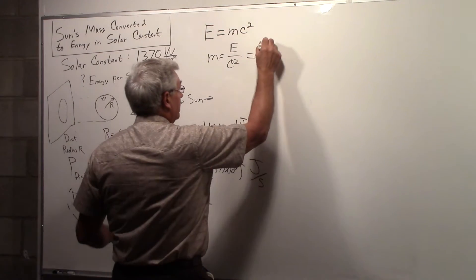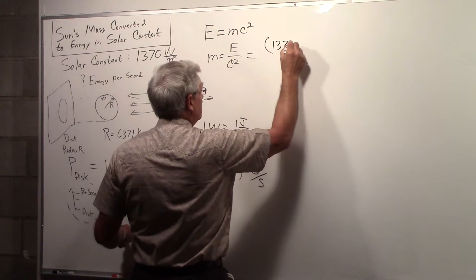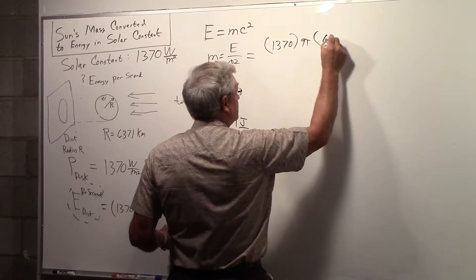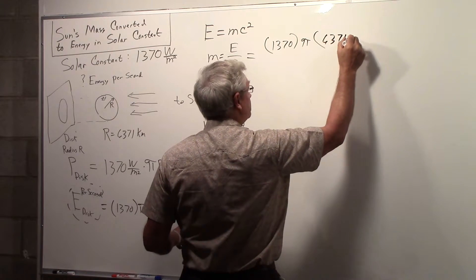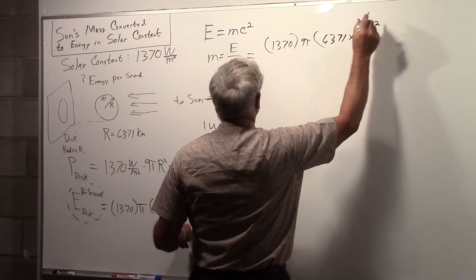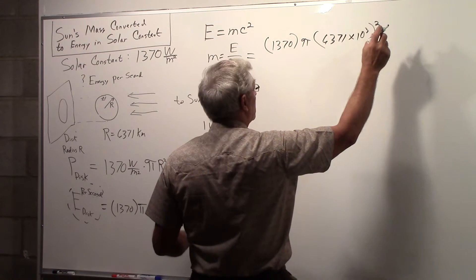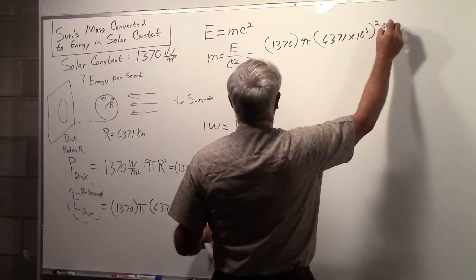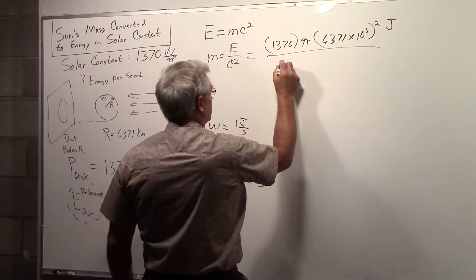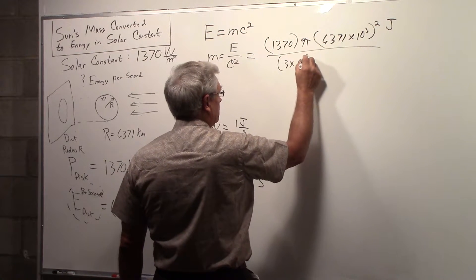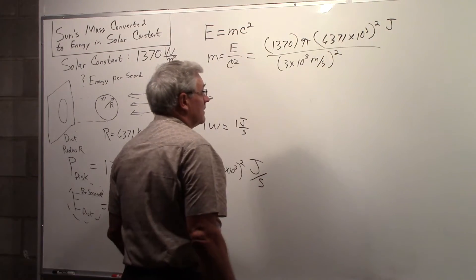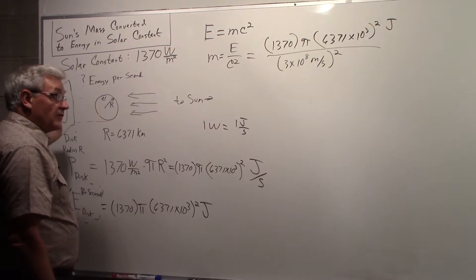And in our case here that will be the 1370 times pi times the radius of the Earth squared. That's in joules. Divided by the speed of light squared.